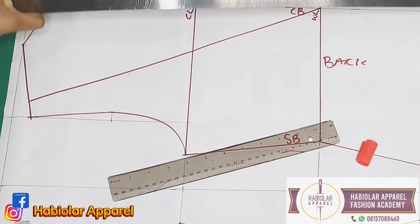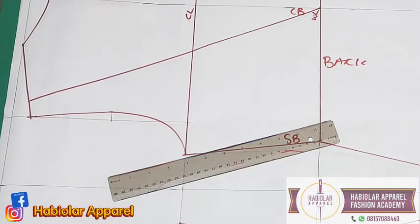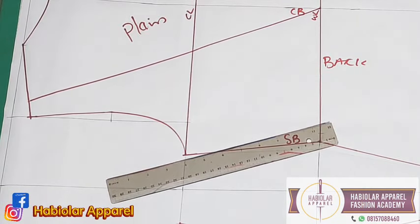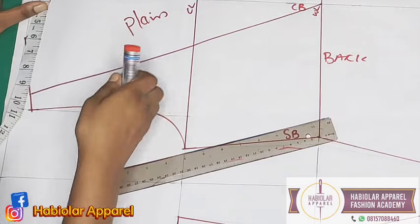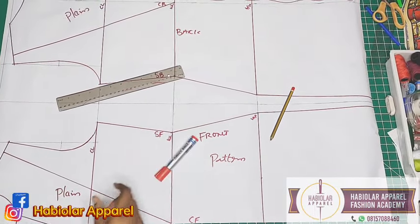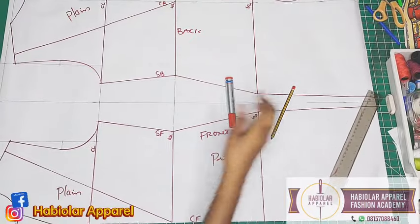For the back here, replace with the plain fabric. Remember to add your one inch zipper allowance at the back. The next thing for us to do now is to go ahead and draw the collar, the shirt collar.